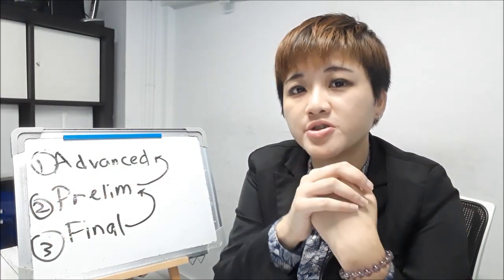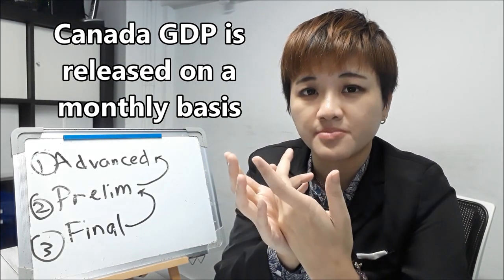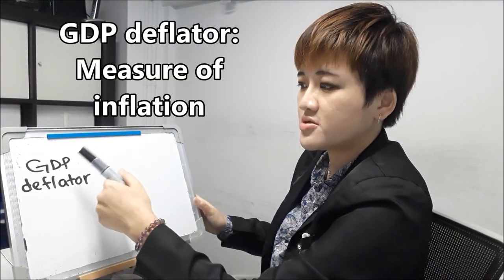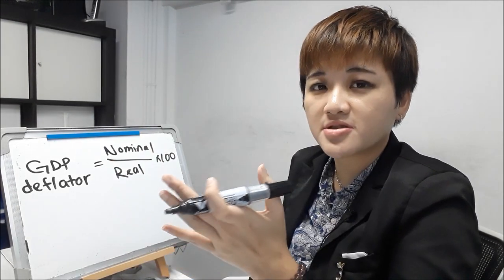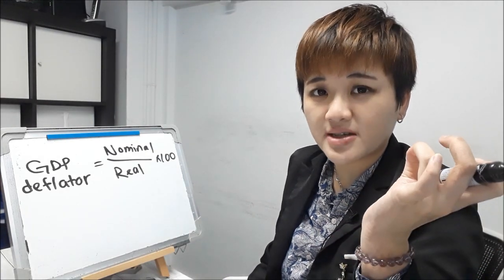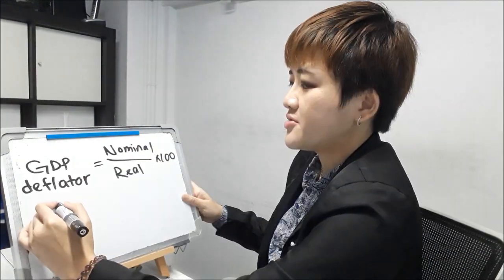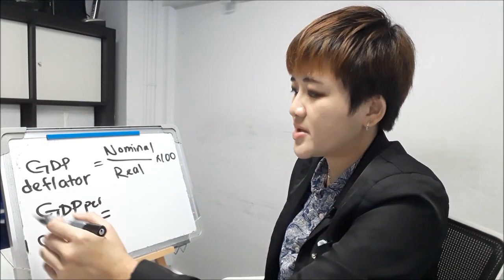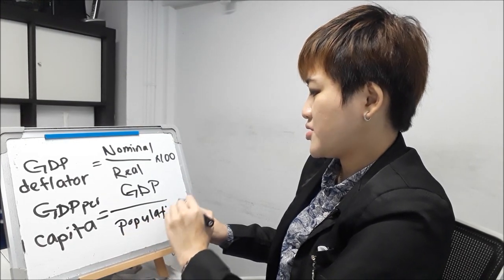GDP is released on a quarterly basis, which is why it is lagging — except for Canada, because they release it monthly. Hence it can produce a pretty significant impact, especially if it deviates too much from consensus. A lot of people don't know that you can use GDP for a lot of different things. You can use GDP to determine inflation using the GDP deflator — which is basically nominal GDP divided by real GDP. You can also compare GDP of different countries, but one problem is that different countries have different populations. So if a country has more people, the GDP is going to be higher. In order to make the comparison fair, you need to look at GDP per capita: GDP of that country divided by the population of that country, which gives you a fair comparison.